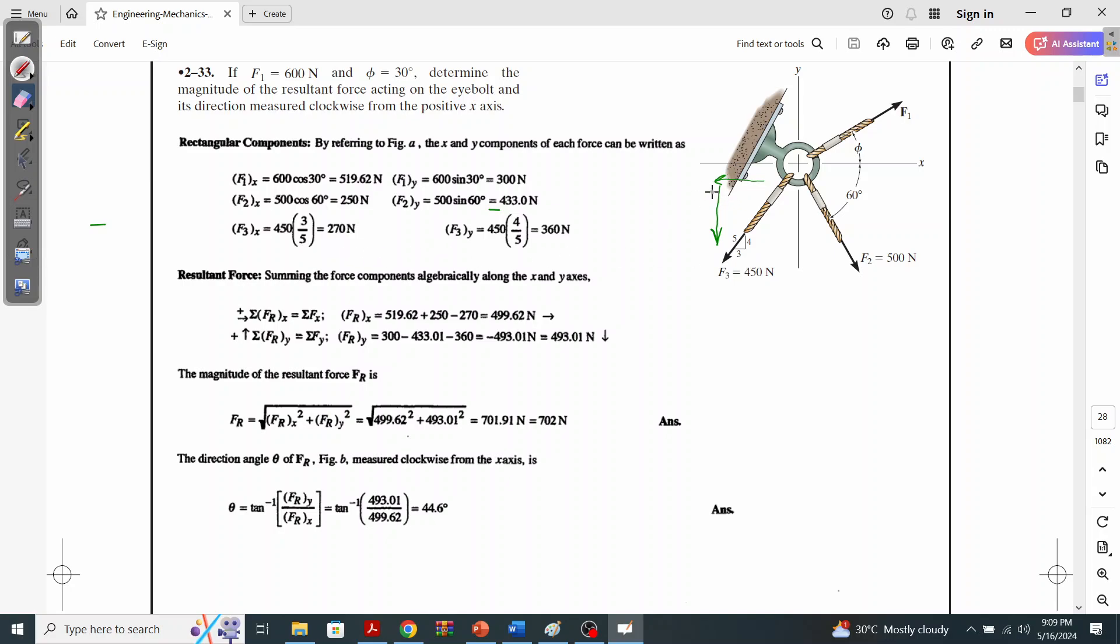But since it is along the negative x-axis (remember this is your negative x), we will put a minus sign here for F3x. And for F3y, it will be again 450 (this is the vertical slope 4 upon 5), so it will be 360 Newtons, but its direction is along the negative y, so it is also going to be negative.